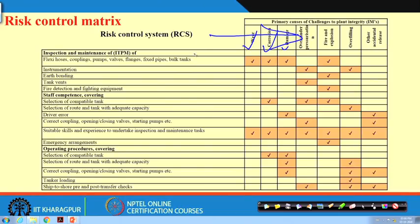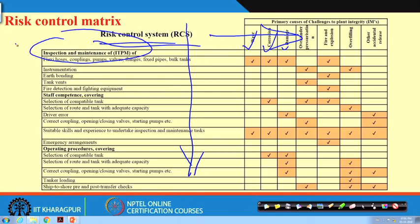For all these initiating mechanisms, we are going to put risk control systems. We have 9 common risk control systems identified after a lot of research. First, put these 9 risk control systems in place; over and above, you can add more. One of the risk control systems is Inspection, Testing and Preventive Maintenance — ITPM — very important. Under ITPM, we do inspection and maintenance of flexible hoses, couplings, pumps, valves, flanges, fixed pipes, and bulk tanks.